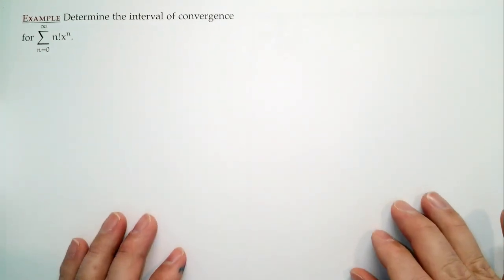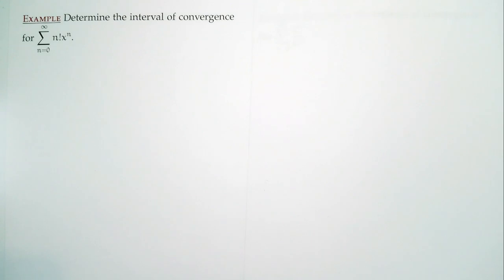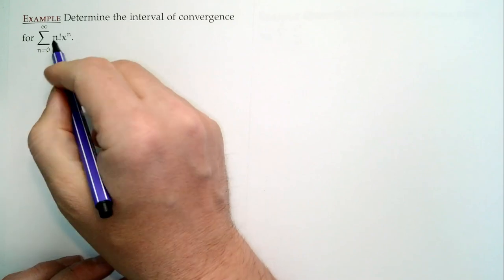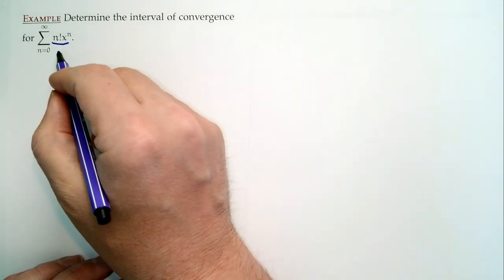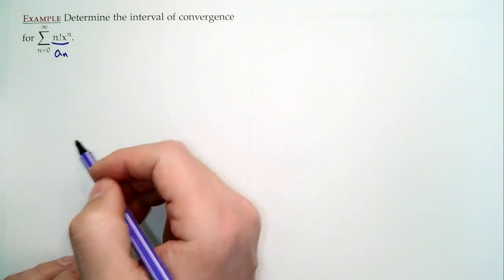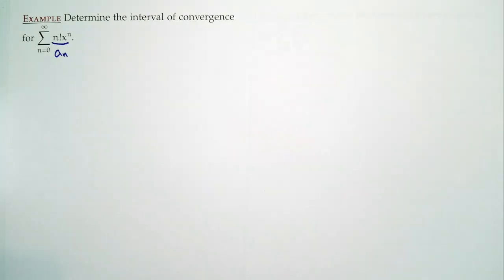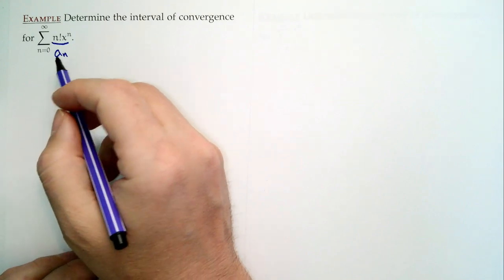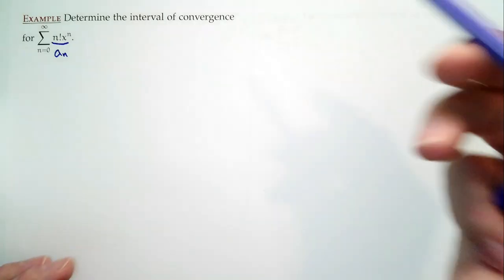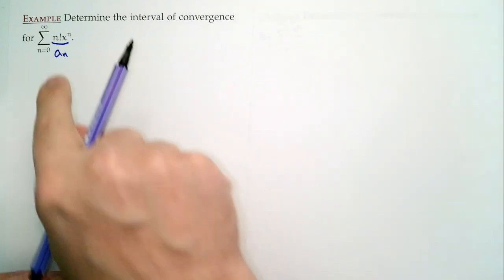Let's try this out. We'll do an example — in fact, we're going to do a lot of examples and get really good with these. First one: determine the interval of convergence for the sum from 0 to infinity of n factorial times x to the n. If we follow the process, we're thinking of this as our a sub n — x is now part of our a sub n. We apply either root or ratio test. Which one do we need here? It's the ratio, because of the factorial.